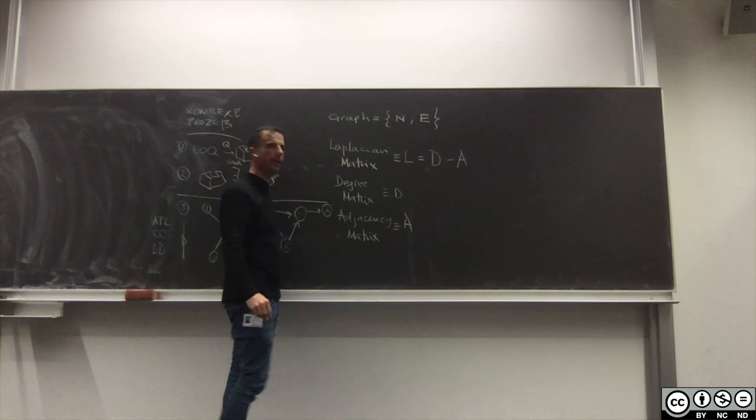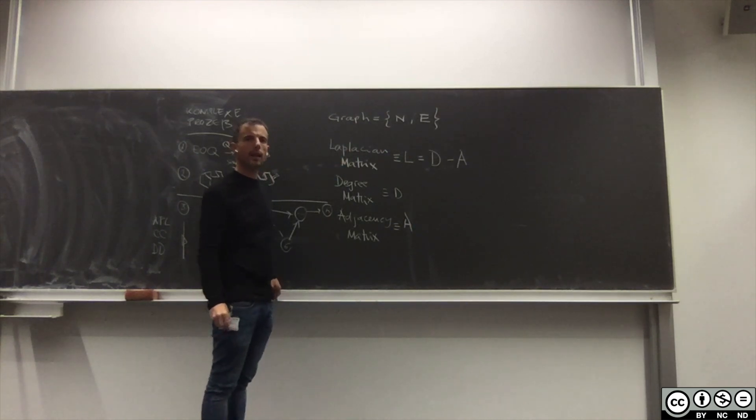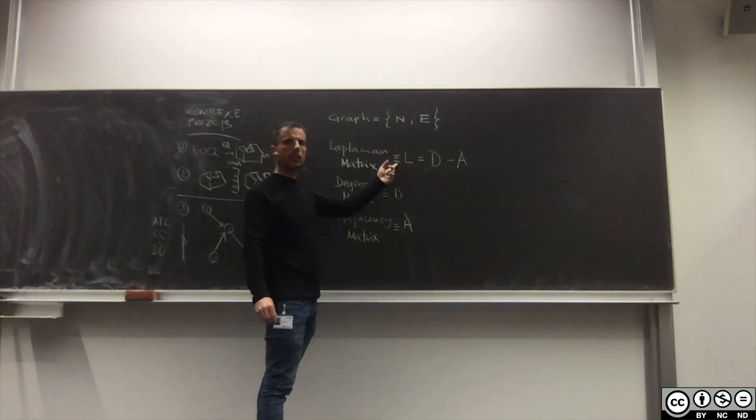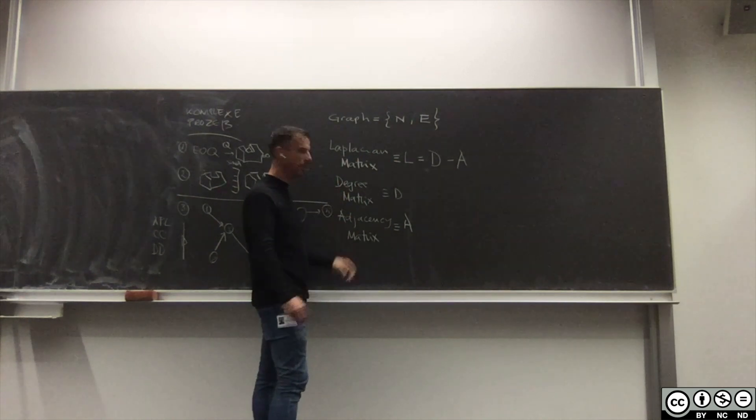Das heißt Äquivalent. Nicht gleich, sondern Äquivalent. Das ist so Gang und Gebe. Also wie berechne ich D und wie berechne ich A? Was sind die Elemente von D und von A?